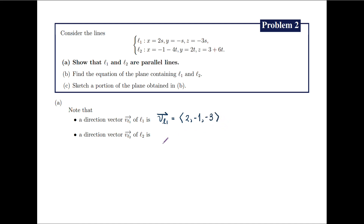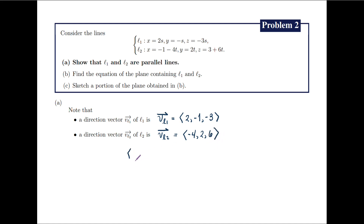Similarly, by looking at the coefficients of t in the parametric equations for L2, we can take the direction vector v_L2 of L2 to be the vector with coordinates negative 4, 2, and 6. Notice that the vector with coordinates negative 4, 2, and 6 is equal to negative 2 times the vector with coordinates 2, negative 1, and negative 3.